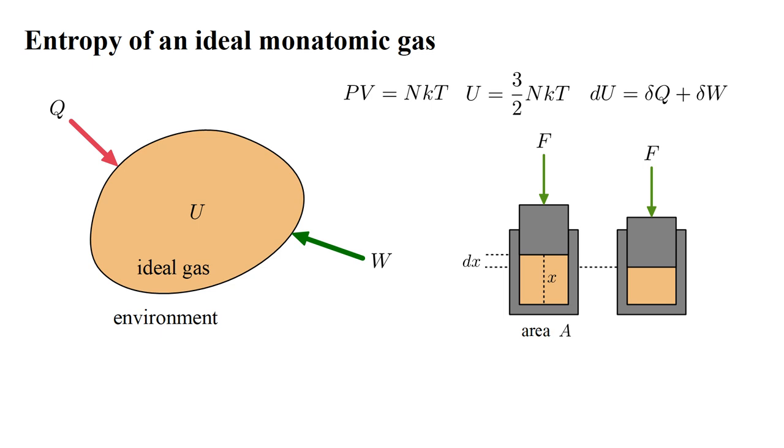Work is done when an external force compresses the gas. Consider a piston with cross-sectional area A. If a force F pushes the piston through a displacement dx, the change in gas volume is dV equals minus A dX. And the work done, delta W, is F dX. This equals F over A times A dX. F over A, force per area, is pressure. And A dX equals minus dV. So delta W equals minus P dV.